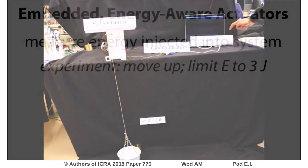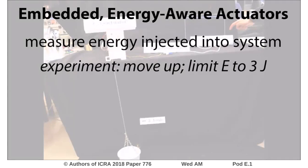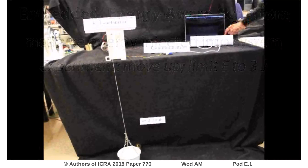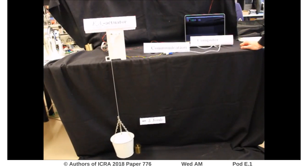The following video shows an experiment in which a maximum amount of energy may be injected into an unknown system. Even when the communication between computer and actuator is disrupted, no more than 3 joules is supplied by the actuator.